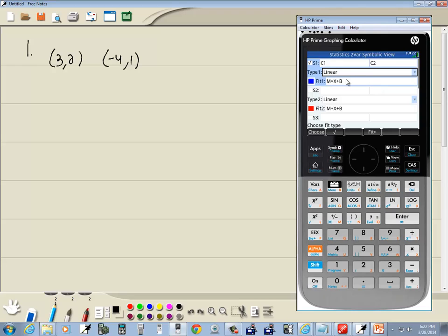After you change this, it may say m times x plus b, like you see here. You simply press plot and then go back to symbol, and you'll see the value there. Well, that's a lot of decimals, and we want exact answers. Notice symbolic view has S1, S2, S3, so forth. Keep that in mind. S1 is where our equation is.